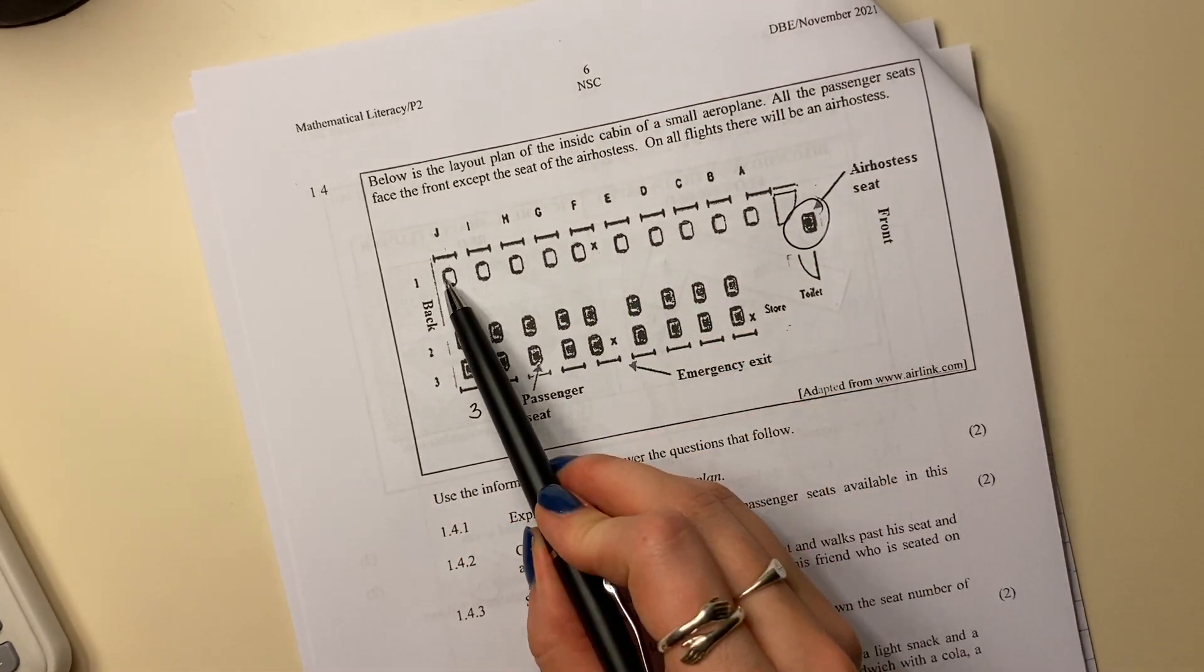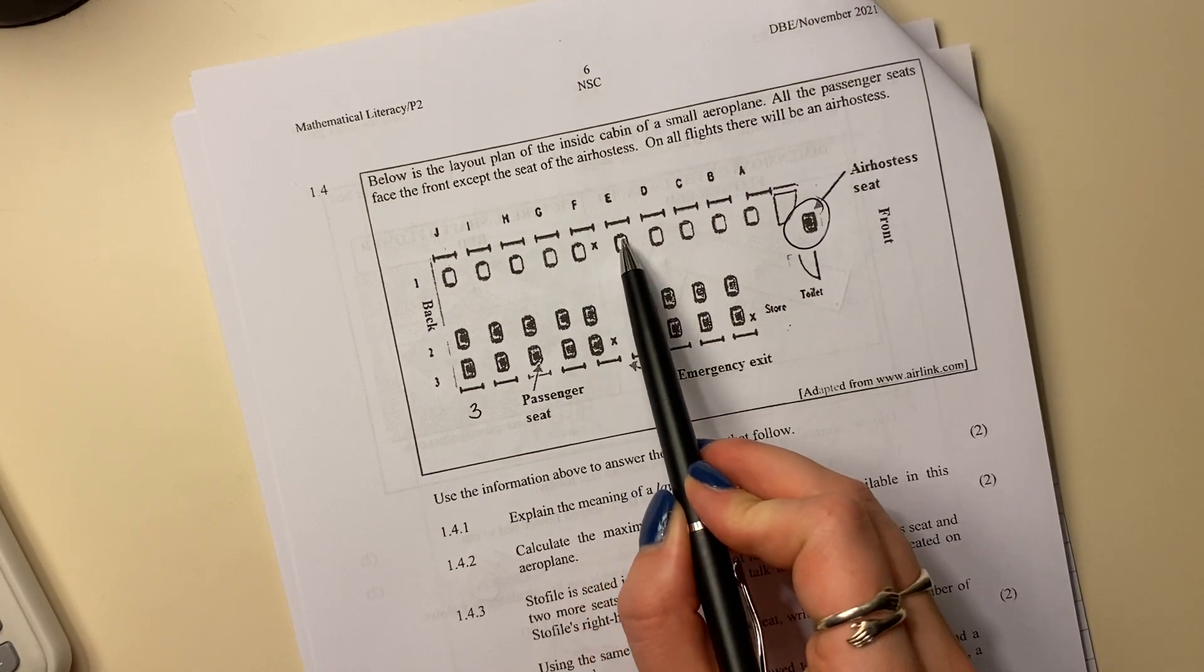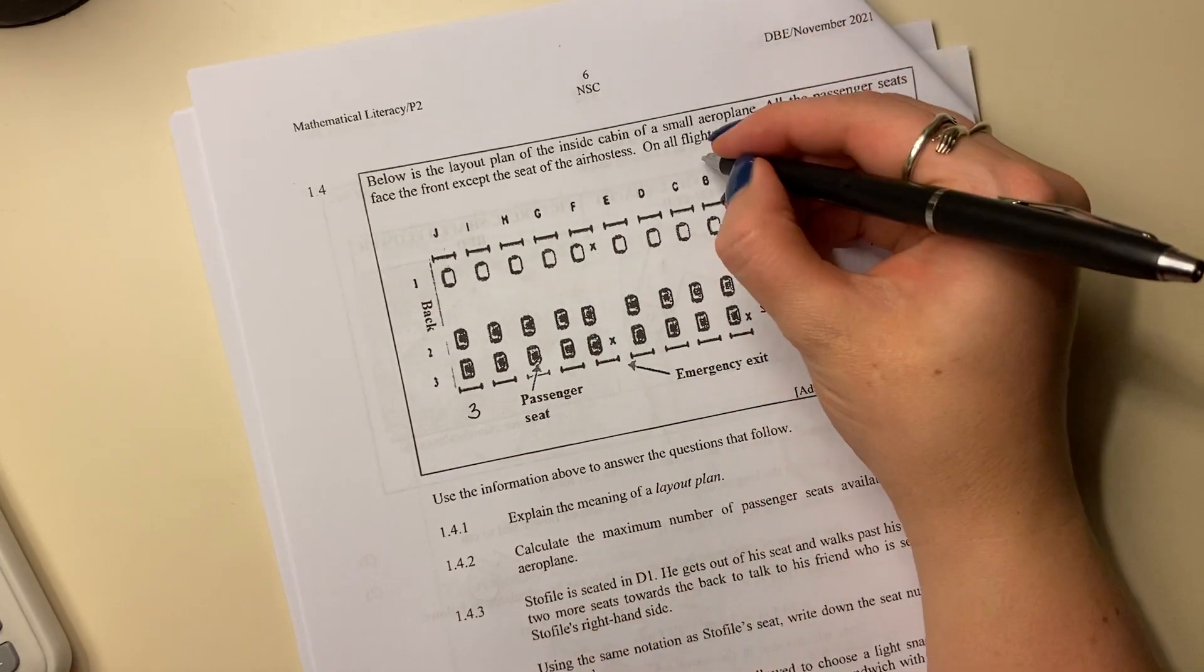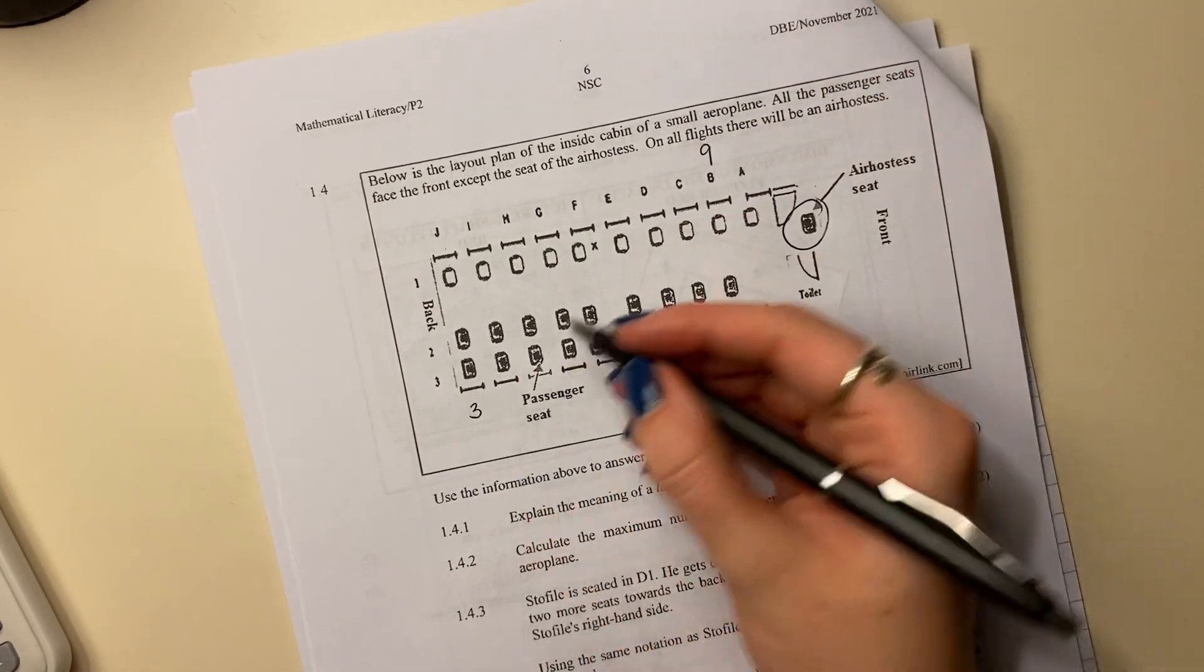One, two, three. How many rows are there? One, two, three, four, five, six, seven, eight, nine. Okay, so there's nine rows, three in each row.